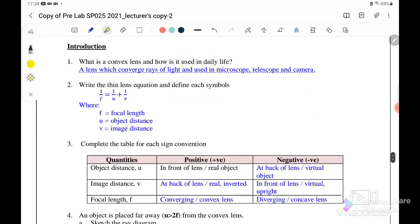For question number one: what is a convex lens and how is it used in daily life? A lens which converges rays of light and is used in microscope, telescope and camera.